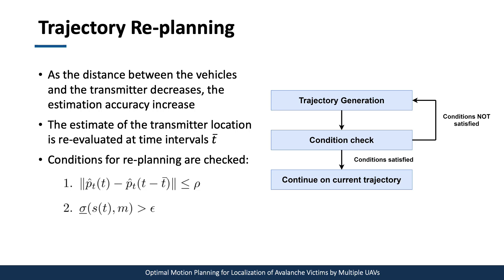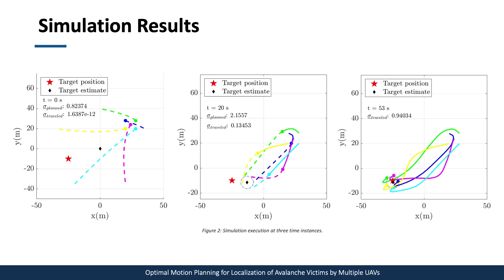Because GPS noise decreases as the receiver approaches the transmitter, we calculate new estimates at constant time intervals. Two conditions are checked to determine whether re-planning is necessary: the first checks if the new estimate is in the neighborhood of the previous one, and the second checks if the observability performance index is above a threshold. If both are met, UAVs continue their current trajectories; otherwise, new trajectories are generated. Simulation results with five UAVs show the observability performance index and consequently the estimate of the victim's location progressively improve as UAV trajectories become more excited, with the estimate converging to the transmitter's true position. Safety and feasibility constraints are met even when re-plannings are triggered.